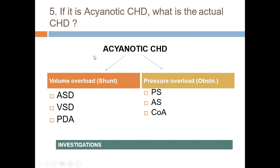In acyanotic congenital heart disease, one group has volume-overloaded ventricles: ASD, VSD, and PDA all cause increased flow to the lungs. The other group has pressure-overloaded ventricles — something is narrowing the outflow — elevating pressure within the ventricle. This includes PS, aortic stenosis, and coarctation. Clinically and on investigations, you can differentiate both groups.